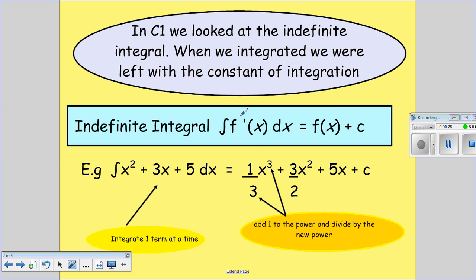So f dash means our function has been differentiated. When we did the indefinite integral, we had to add plus c because if there had been a constant originally, when we differentiate a number we get 0, so we can't tell whether there had been a number there or not.